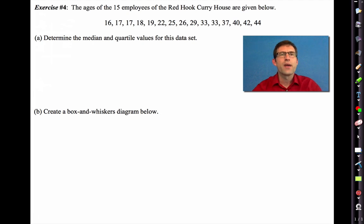Let's keep going. So exercise four. The ages of 15 employees of the Red Hook Curry House are given below. Letter A says determine the median and quartile values for this data set. Now, again, in order to really get median and quartile values, your data set has to be in ascending or descending order. But the cool thing here is let's figure out the median first.